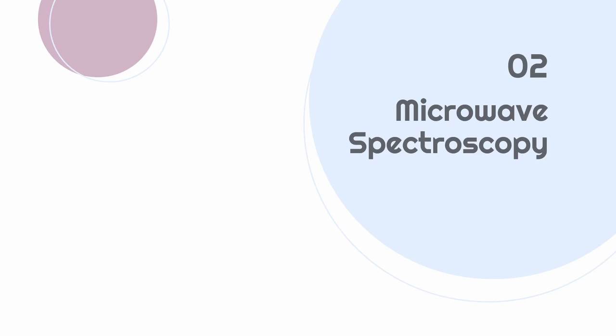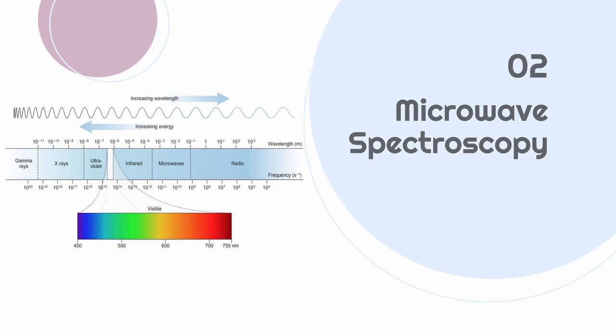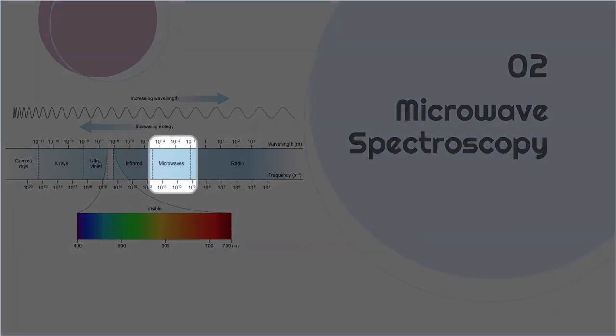Welcome to the second part of the course, Microwave Spectroscopy. Microwave spectroscopy corresponds to the microwave region of the electromagnetic spectrum.